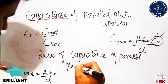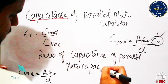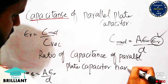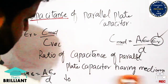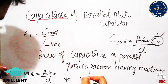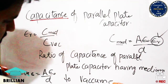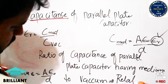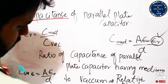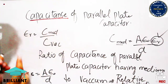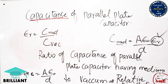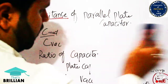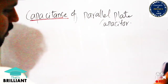Relative permittivity is the ratio of the capacitance with medium to the capacitance with vacuum. If these two values are equal, εᵣ equals one. Similarly, if the medium is vacuum or air, the relative permittivity is approximately one. This is the final expression for relative permittivity.